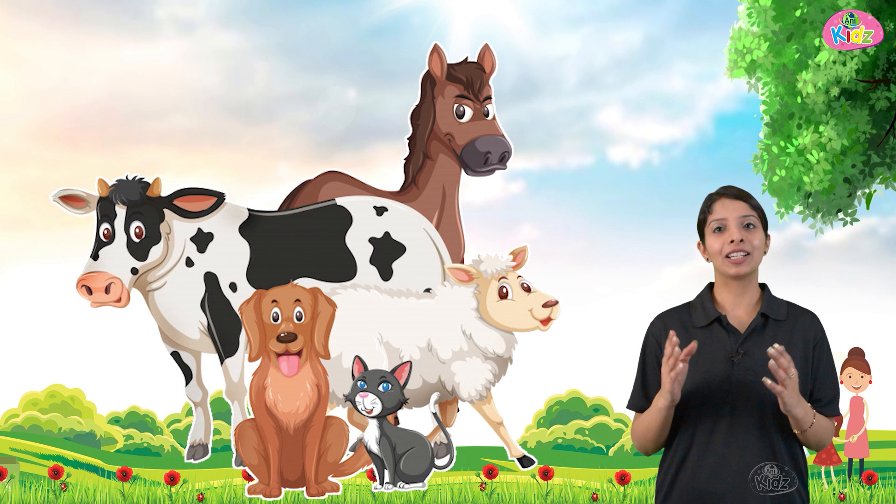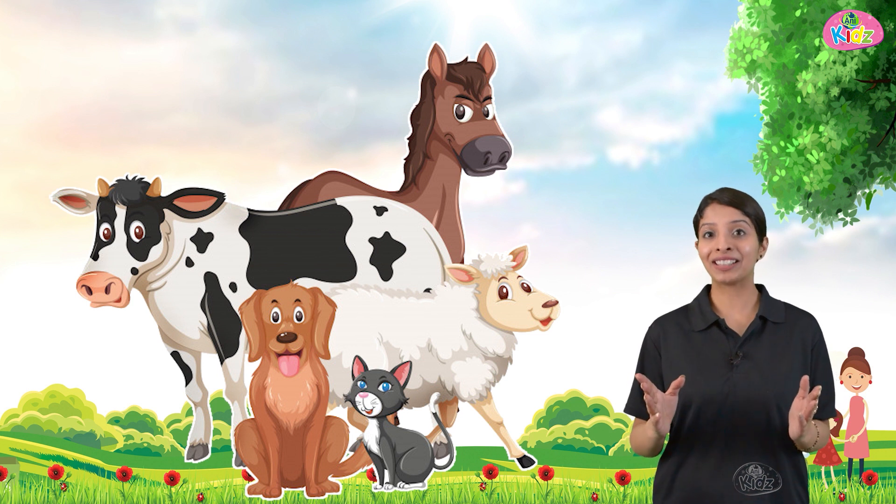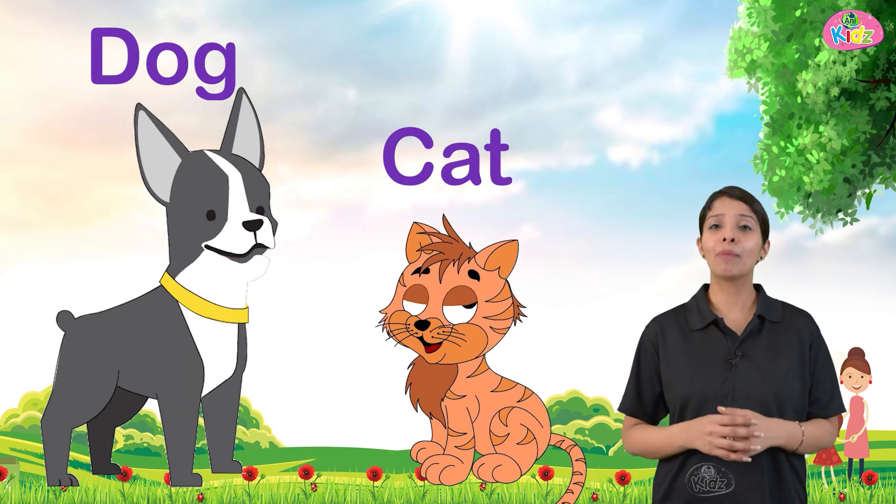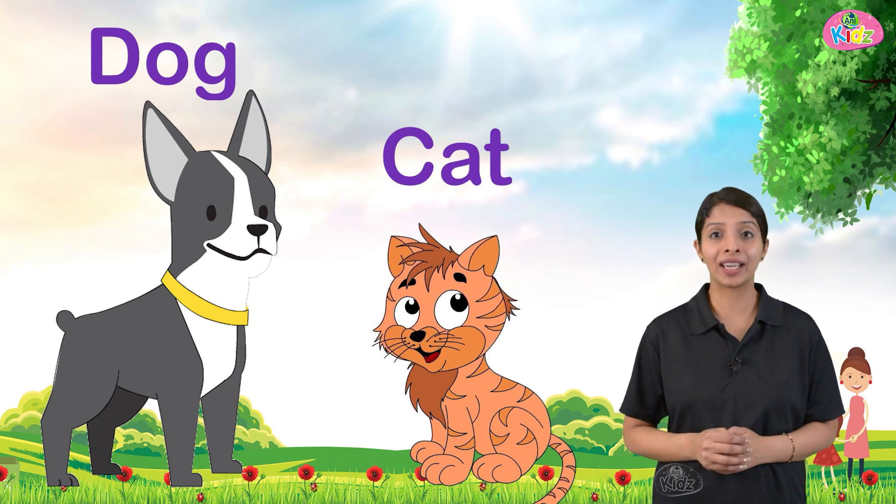One very important member of the family is the pet that we have. Someone may have a dog, a cat, or many different kinds of pets. We need to take care of our pets — give them their food and take them for walks, because they also do a lot of things for us.